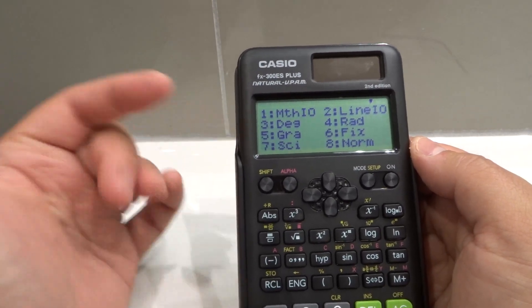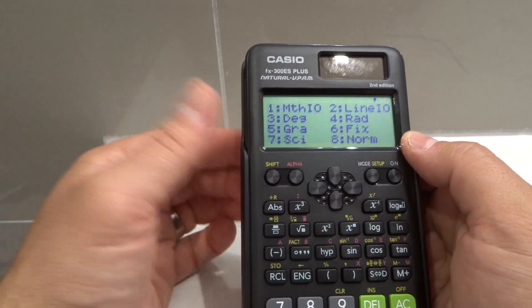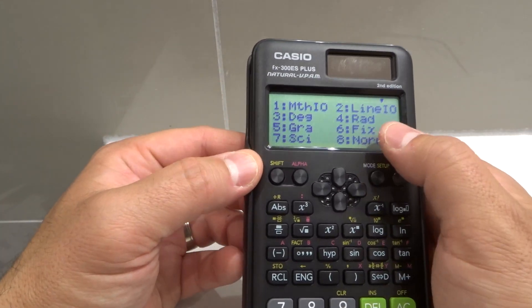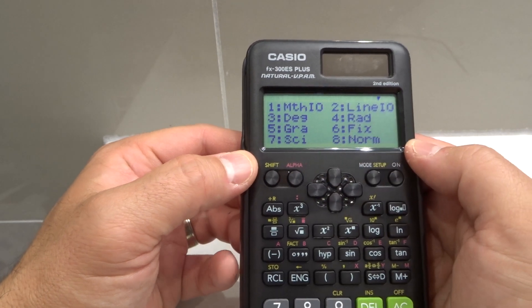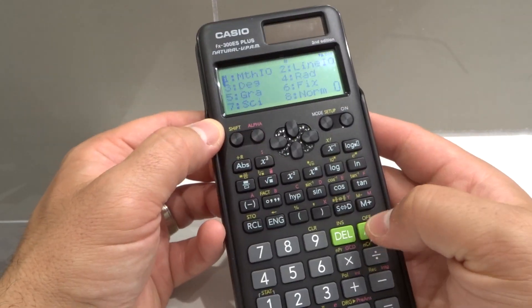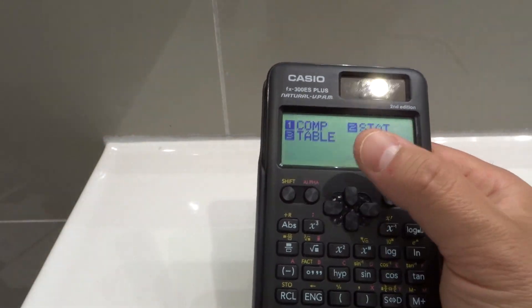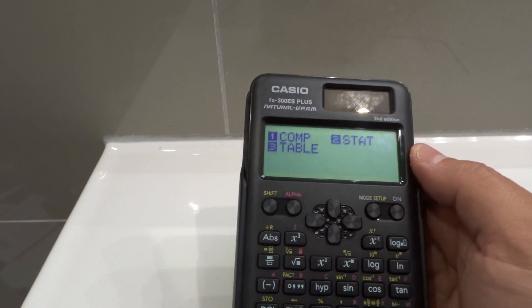There's also degree and rad obviously, but it really depends on what you're doing in math, but most of the time it's going to be fix, sci, or norm that you're looking for. And if you're looking for just a basic mode, once again, let's get out of this option. Then you're going to go with these ones right here, which is computation, statistics, and table as far as I know.